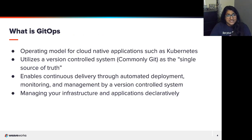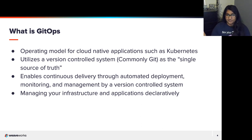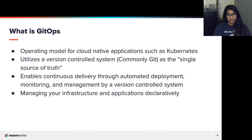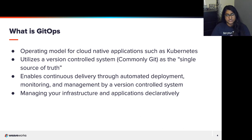So, what is GitOps? GitOps is an operating model for cloud-native applications such as Kubernetes — though I want to highlight that it's not just for Kubernetes. If you are doing a multi-cloud infrastructure, you can still use GitOps, and we'll be talking about that more in detail today. GitOps utilizes a version-controlled system, most commonly Git, as the single source of truth. It enables continuous delivery through automated deployment, monitoring, and management, and with GitOps you're managing your infrastructure and applications declaratively.